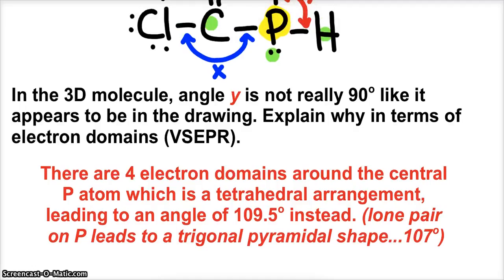And technically, for this question, it just says explain why, doesn't really force you to give the bond angle. I would accept, and I'm sure the AP graders would accept, the fact that you would mention there are 4 electron domains around the central phosphorus atom, leading to a tetrahedral arrangement of those domains. And that should be enough. But if you threw in the 109.5 or 107 as a little added bonus, that couldn't hurt you.